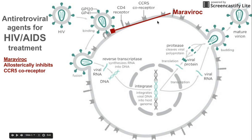The first drug we're going to talk about is called Maraviroc. Maraviroc is an antiretroviral agent that blocks the CCR5 co-receptor. It allosterically inhibits this receptor, so you can imagine that if a drug is coming in and blocking this receptor, it might inhibit HIV from entering the cell to begin with. This is the drug that affects HIV the earliest in its life cycle. But of course, with HIV, one drug is not enough — we have to use many more.